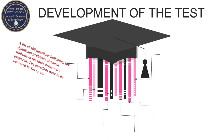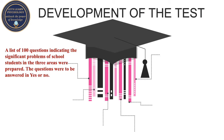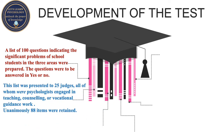Now let's understand how this test was developed. First, a list of 100 questions indicating significant problems of school students in the three areas — emotional, social, and educational adjustment — were prepared. The questions were to be answered in either yes or no.